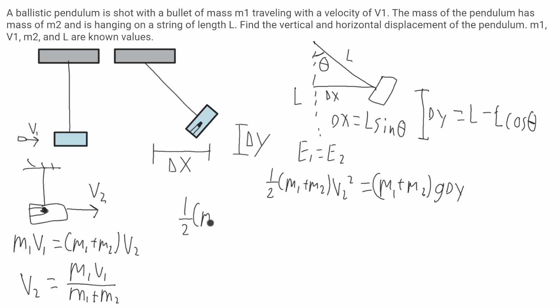It'll be quite long. It'll be one half times m1 plus m2 times m1 v1 over m1 plus m2, that is all going to be squared, and this will be equal to m1 plus m2 times g times delta y.